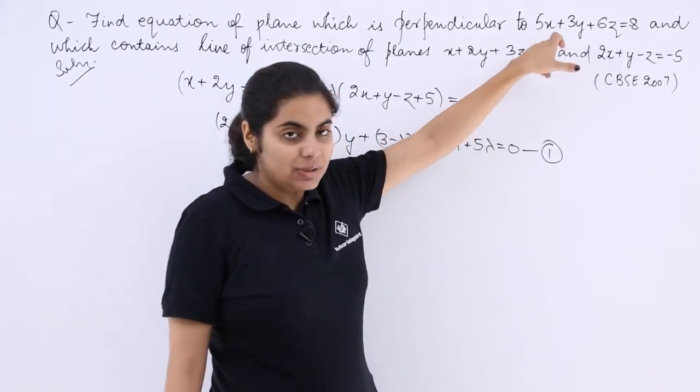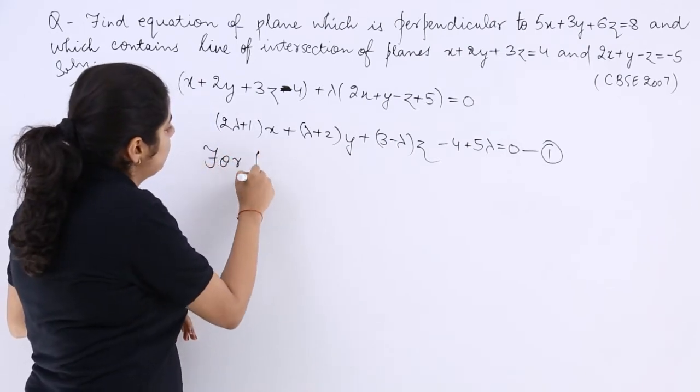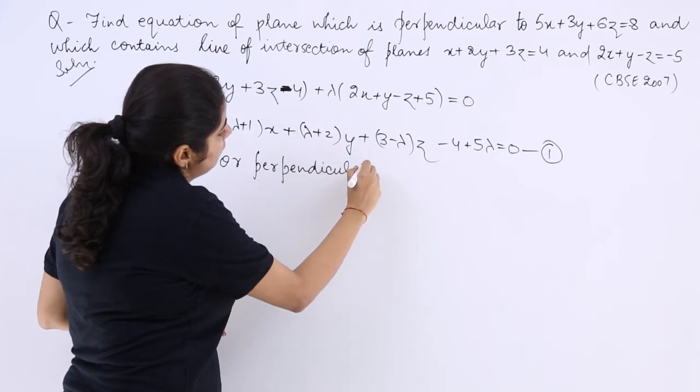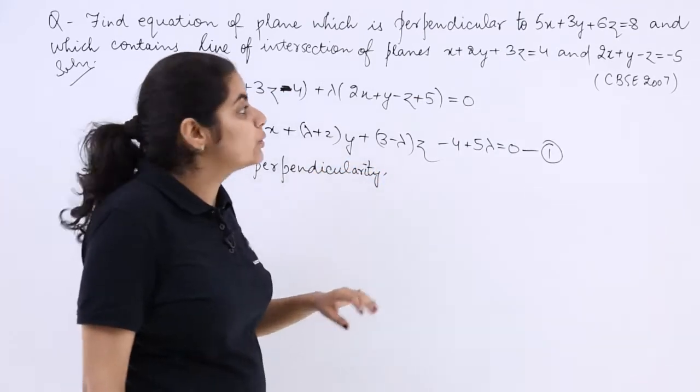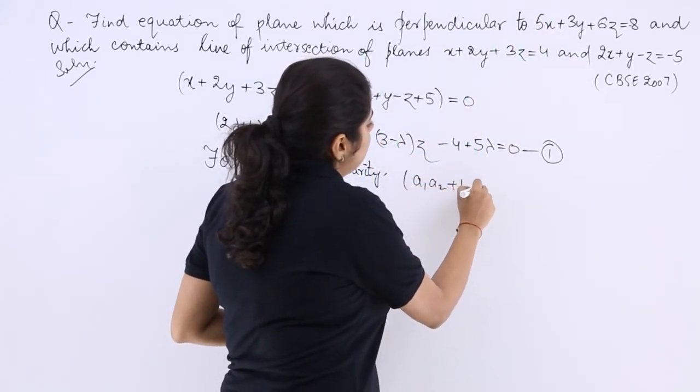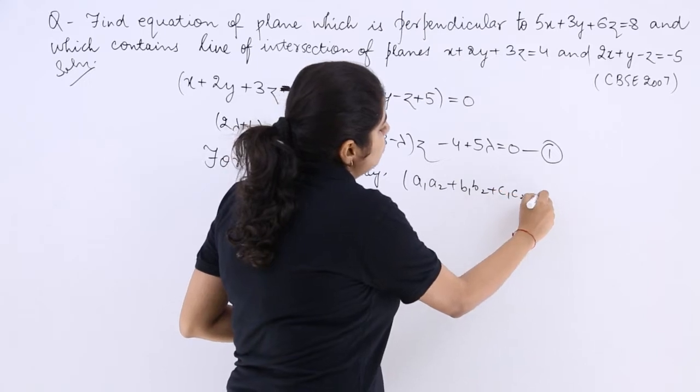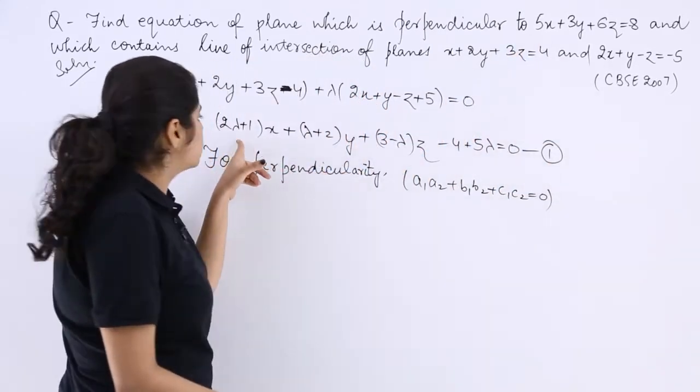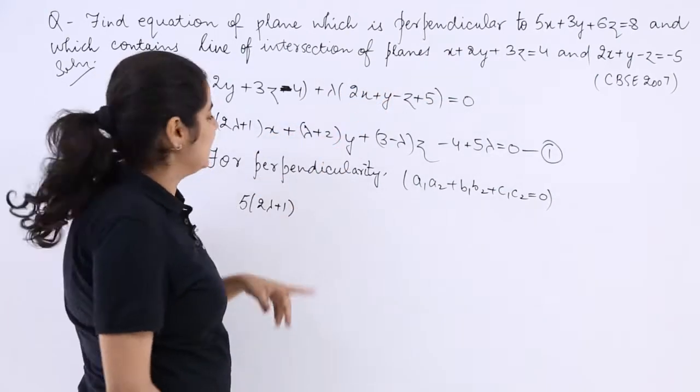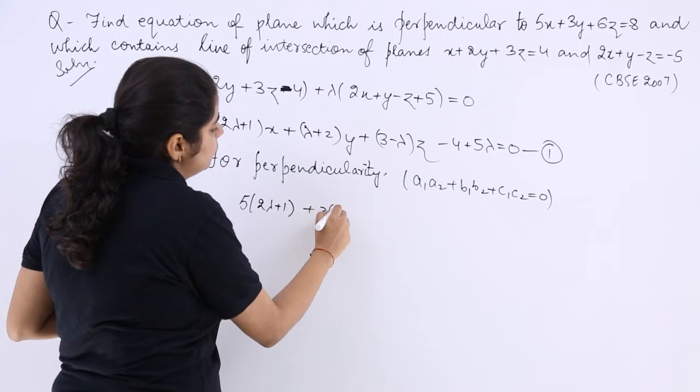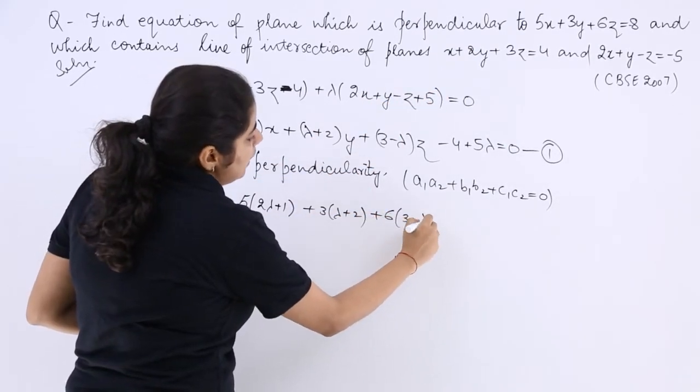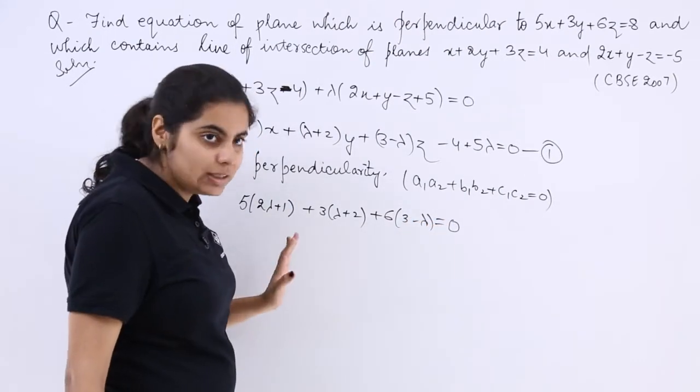If it is perpendicular to this plane, for perpendicularity we will simply see the condition to be followed, which is a1 a2 plus b1 b2 plus c1 c2 is equal to 0. Now, 5 into 2 lambda plus 1, plus 3 into lambda plus 2, plus 6 into 3 minus lambda, is equal to 0.